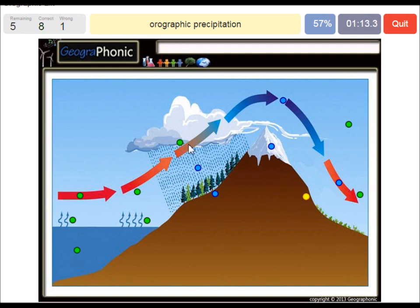Here we see orographic precipitation, which causes a lot of nice big vegetation on the windward side of the mountain.